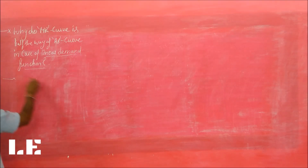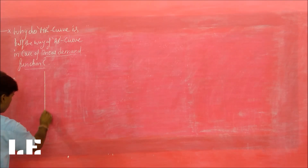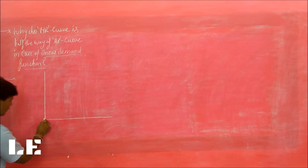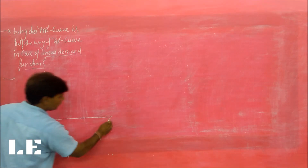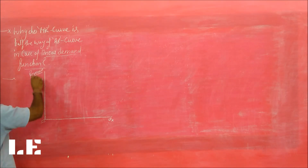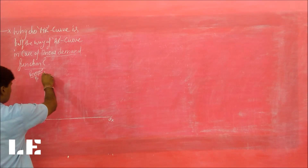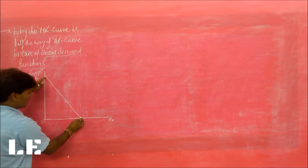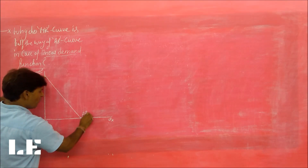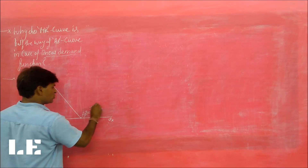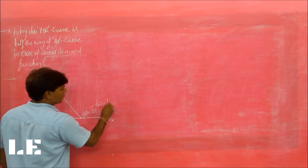The question is asking: when we make a demand function — let us assume here I am representing the quantity on the horizontal axis and the revenue or prices on the vertical axis. I have drawn a linear demand function — a straight line. This linear demand function, this straight line, we also call it the average revenue function because it is the price line. It is also called the average revenue function, also called the price line.